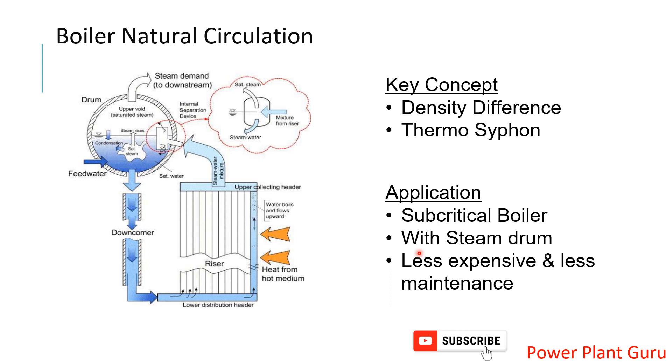Compared to forced circulation, natural circulation is less expensive and less maintenance-prone because forced circulation requires boiler circulation pumps, water separator drums, and additional equipment that add cost.